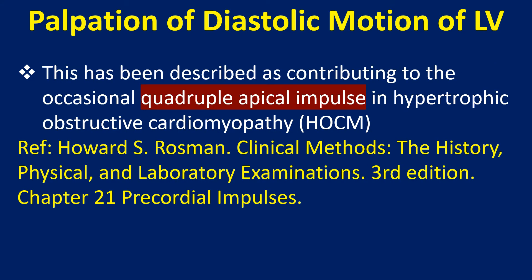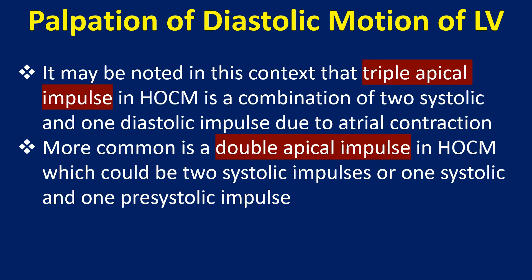This has been described as contributing to the occasional quadruple apical impulse in hypertrophic obstructive cardiomyopathy (HOCM). The triple apical impulse in HOCM is a combination of two systolic and one diastolic impulse due to atrial contraction. More common is a double apical impulse in HOCM, which could be two systolic impulses or one systolic and one presystolic impulse.